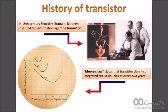So in the 19th century, the transistor story started with the Shockley, Brattain, and Bardeen invention of the transistor. Then Moore's Law came, which states that the transistor density on an integrated circuit doubles every two years.